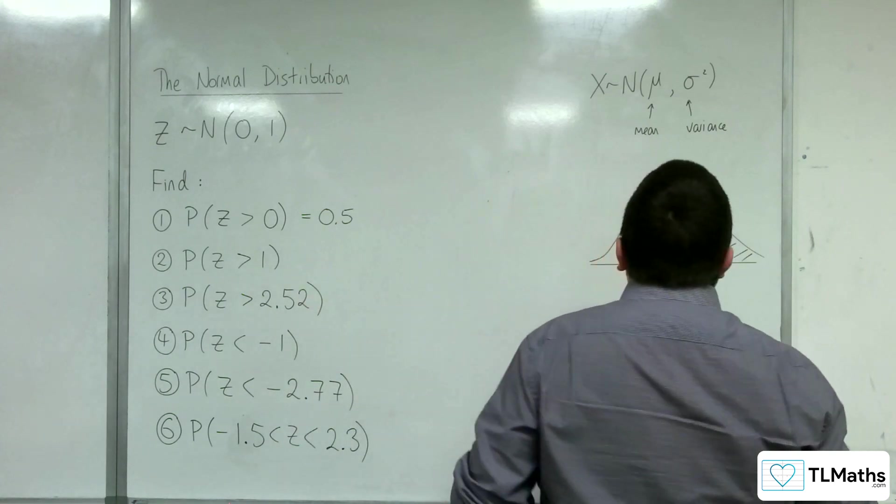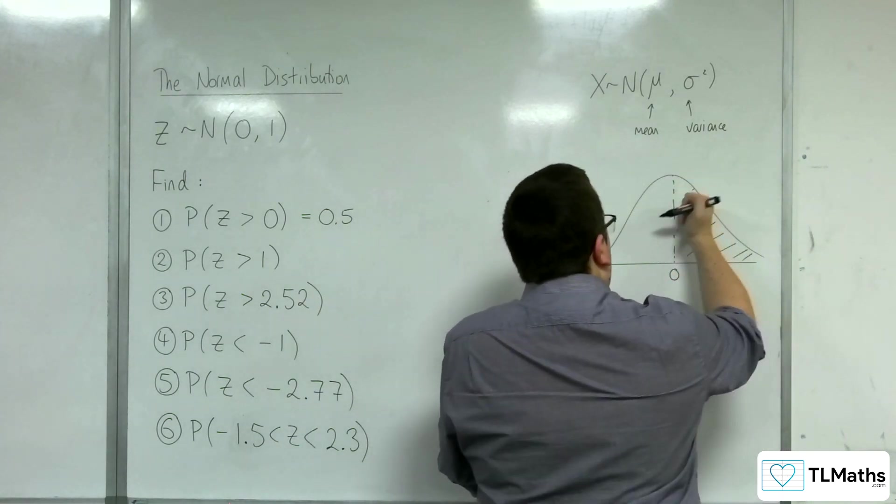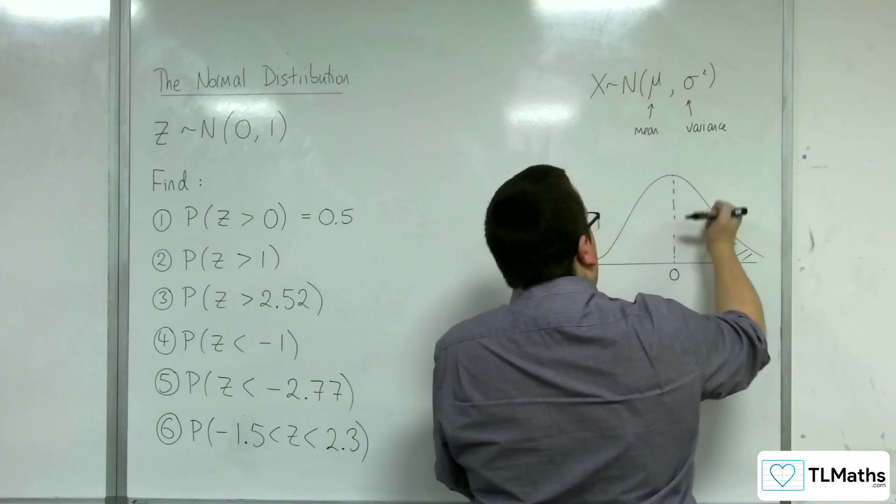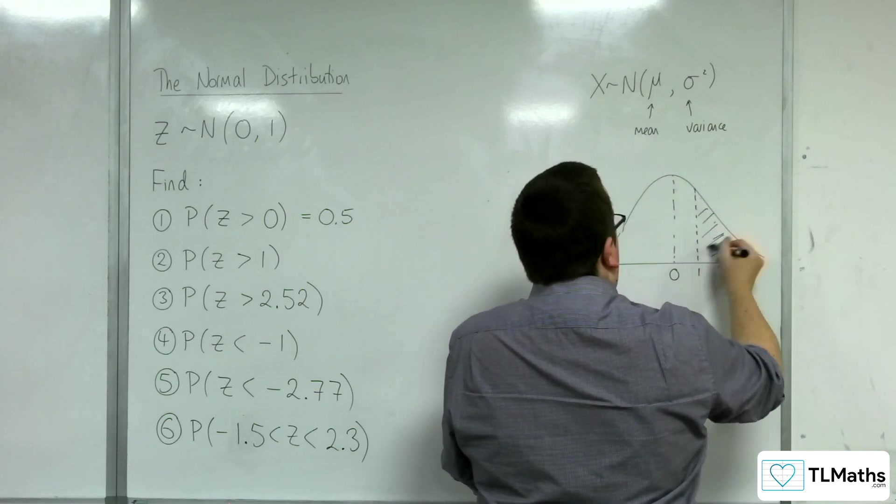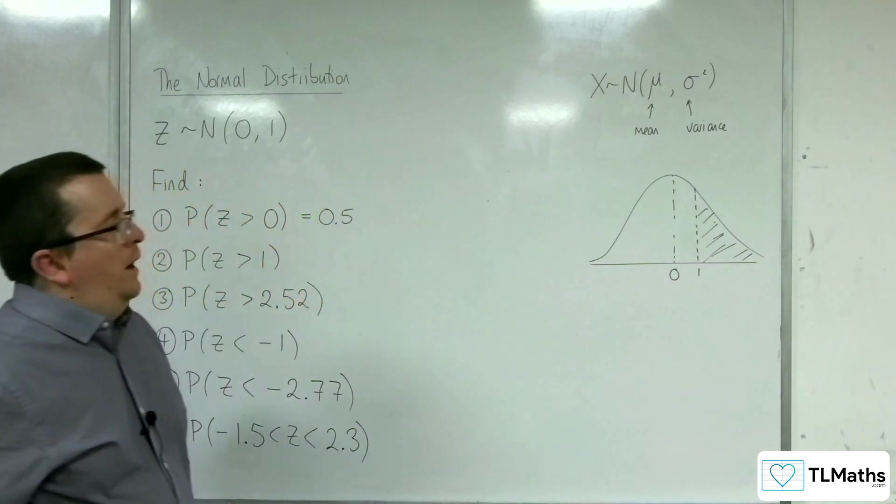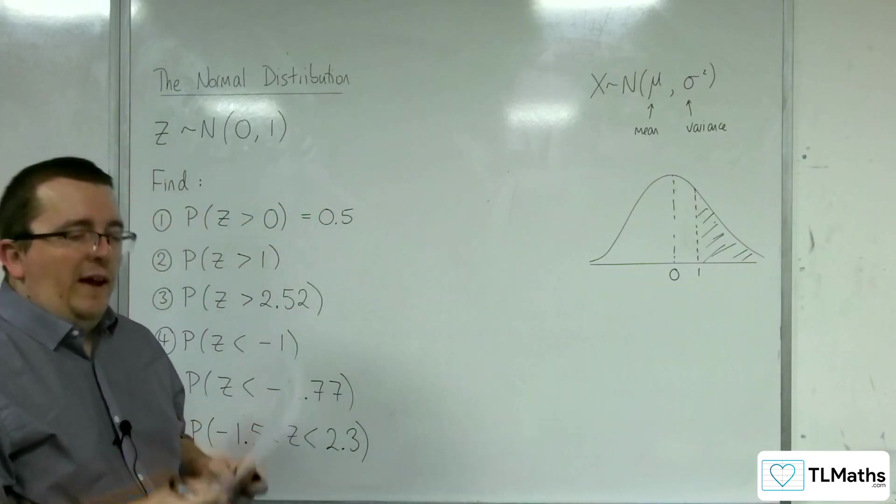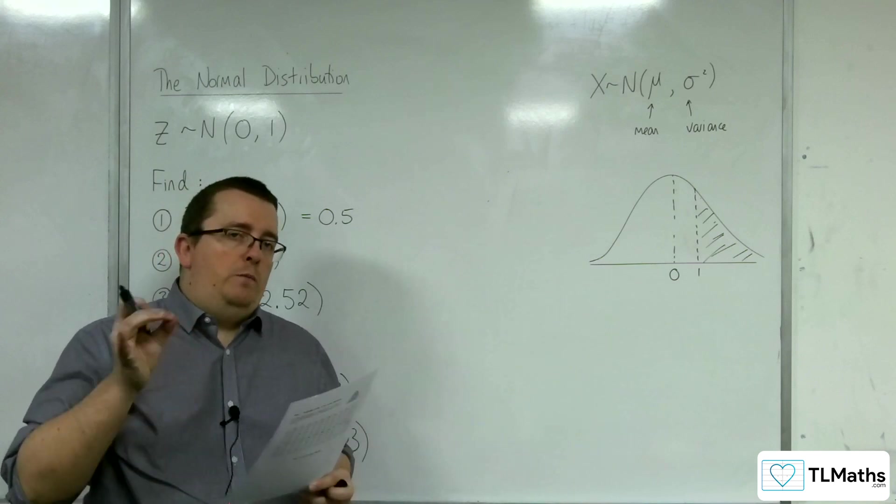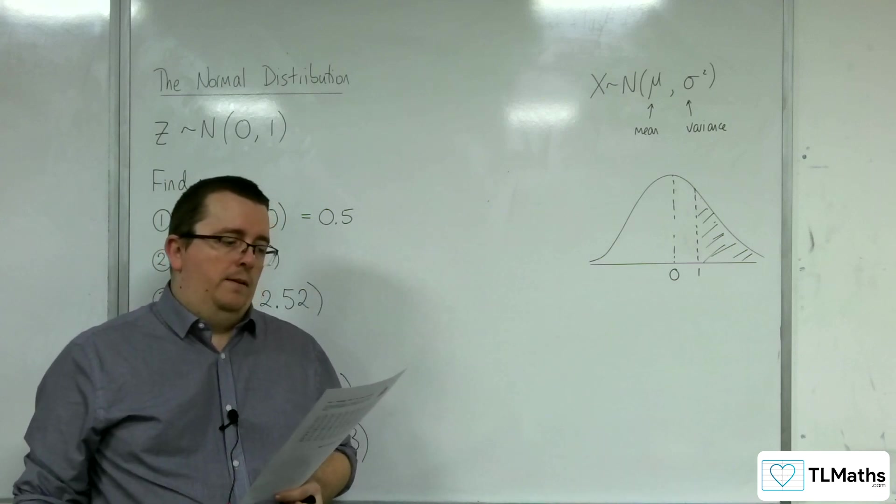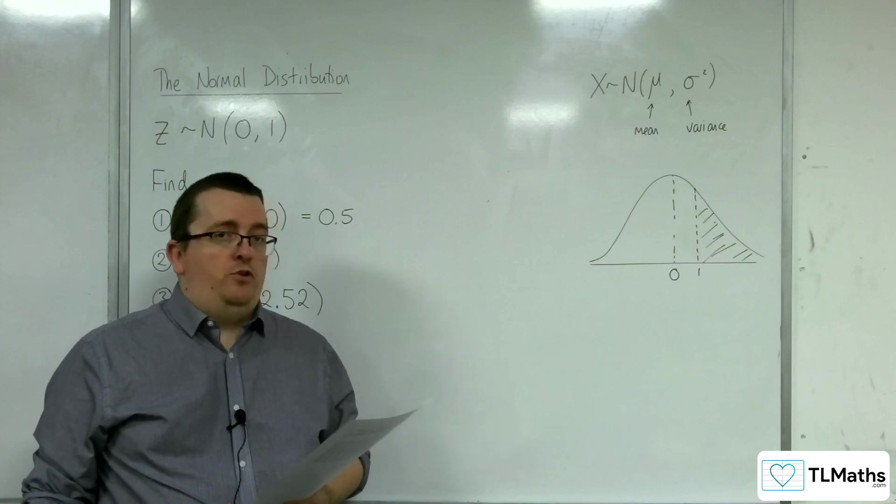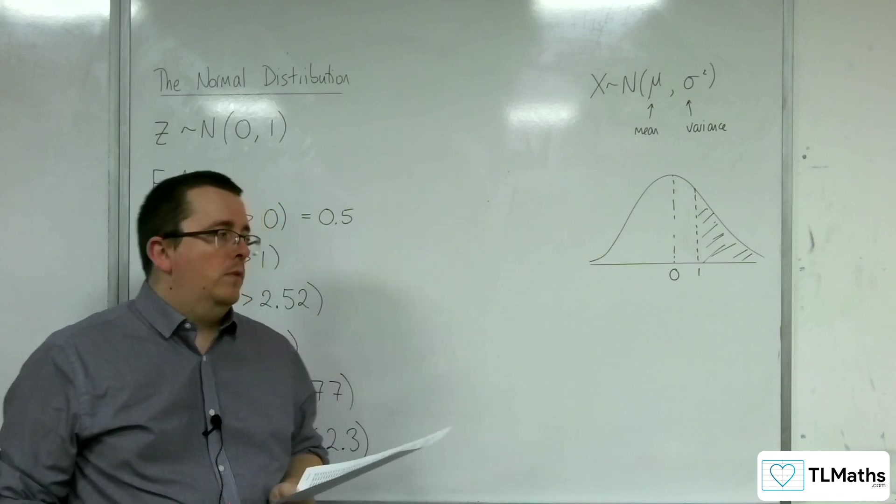Right, probability of Z being greater than 1. So I'll shade up that bit. So we're now looking at this shaded region here. So the thing is, the tables only show you probabilities that are less than. They don't show you greater than ones, which is a bit of a problem.